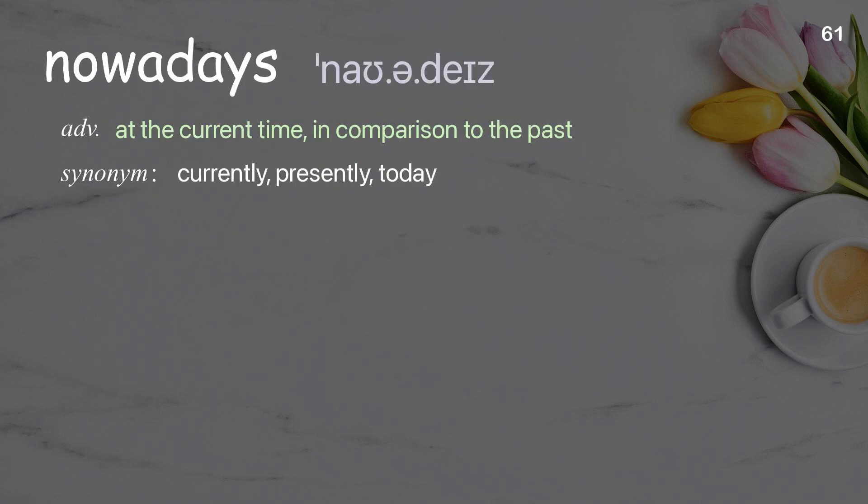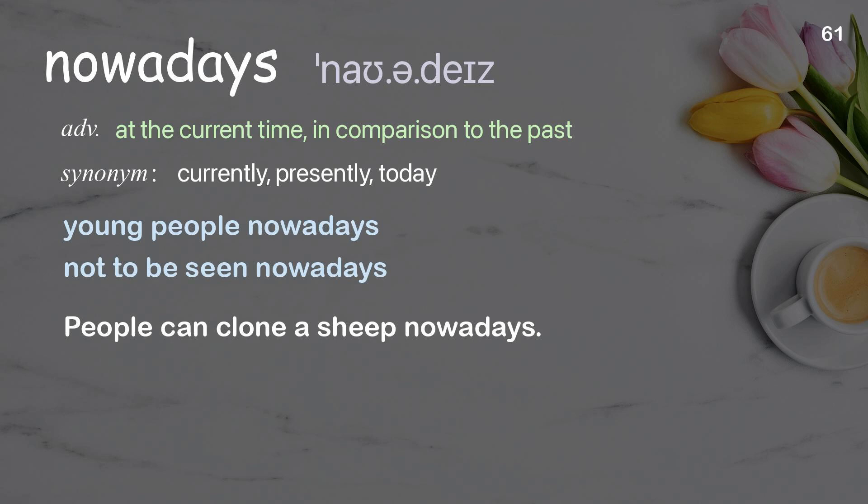Nowadays: At the current time, in comparison to the past. Examples: Young people nowadays. Not to be seen nowadays. People can clone a sheep nowadays.